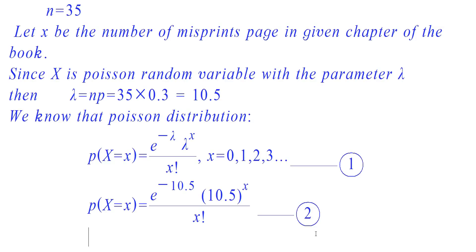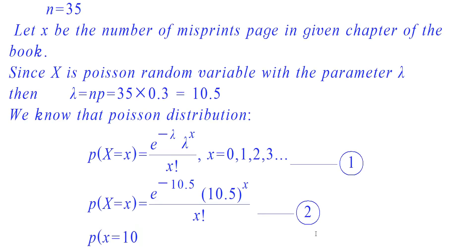And probability of 10 misprints in chapters 1 and 5 will be equal. So we need to find the probability that chapter 1 has 10 misprints. Let us find probability of X is equal to 10. To find the probability of X is equal to 10, substitute X is equal to 10 in equation 2.